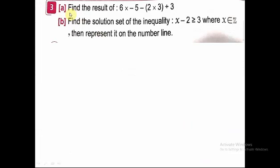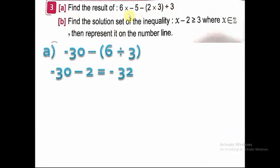Question number 3: find the result of 6 × (−5) − 2 × 3 ÷ 3. I multiply first: 6 × (−5) = −30. Then 2 × 3 = 6, divided by 3 = 2. So −30 − 2 = −32.